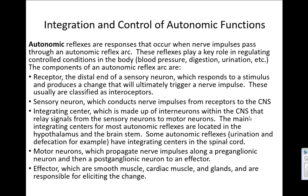The last topic in this lecture is autonomic reflexes and the integration and control of our autonomic nervous system. Autonomic reflexes are actually very similar to somatic reflexes — both utilize five parts of a reflex arc: receptors, sensory neurons, integrating center, motor neurons, and effectors. We'll discuss things like blood pressure changes and what our body does in response, as well as changes during digestion, at various points in the semester.